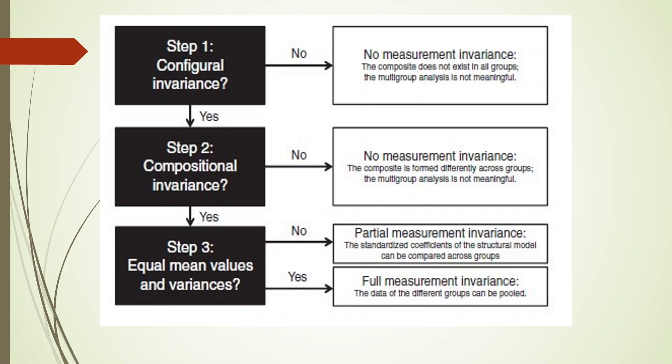If you are not achieving invariance, it means it is necessary to report separate results for male and female. Remember, we are carrying out all this exercise to reach our ultimate objective: is it necessary to report separate results for male and female, or will pooled results work? Is it necessary to report a separate model for public limited and private limited, or will one pooled model serve the purpose?